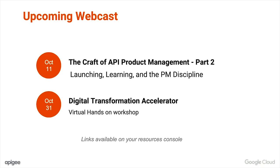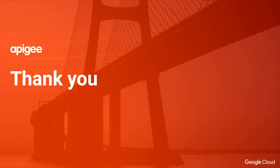Thanks Greg, thanks Bala. We're completely out of time, but we are not done with this topic - there's a part two. As I mentioned, this is a four-part series. There's a part two on October 11th, which is on launching, learning, and the API PM discipline. We're going to use that session to talk about organizations and API providers that have launched API-first products - how do they measure success, how do they establish a product management team? We're really looking forward to a very interesting next session. I encourage everybody who's on the webinar to kindly register for the upcoming series. Until the next time, keep your feet on the ground and keep reaching for the stars. Thank you.